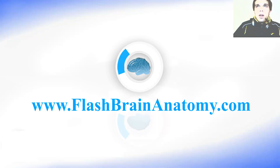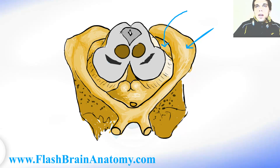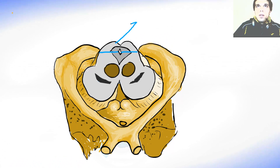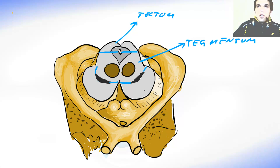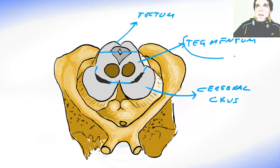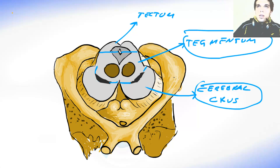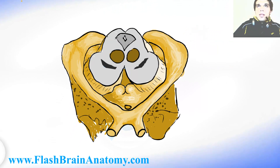We had the lateral geniculate body over here, and over here we had the medial geniculate body. These two round bodies over here are the mammillary bodies. There are three parts of the mesencephalon. The border between two parts is here. This part is called the tectum, and this part over here ends close to the dark structure called the substantia nigra — that part is called the tegmentum. The part ventral from the substantia nigra is called the crus cerebri. The tegmentum and crus cerebri together are called the cerebral peduncle.